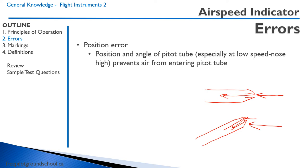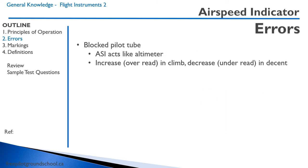We'll discuss how to correct for position error in a later slide. Another potential error is a blocked pitot tube. In this case, the airspeed indicator will act like an altimeter, because as you'll learn in your next lesson, it will essentially be constructed the same way. What that means is that in a climb, the airspeed indicator will over-read, and in a descent, it will under-read.